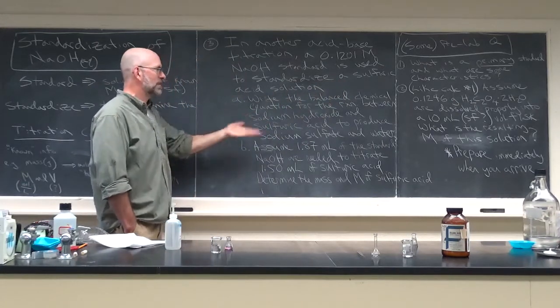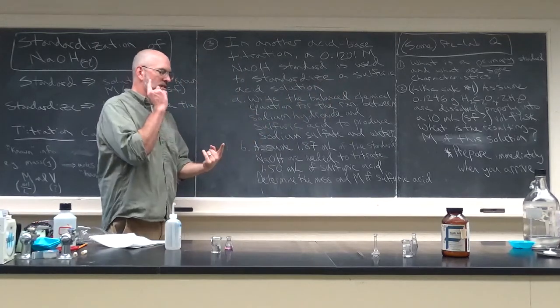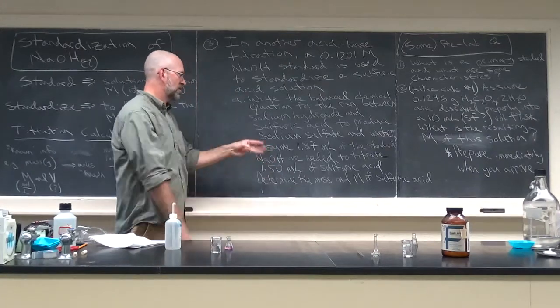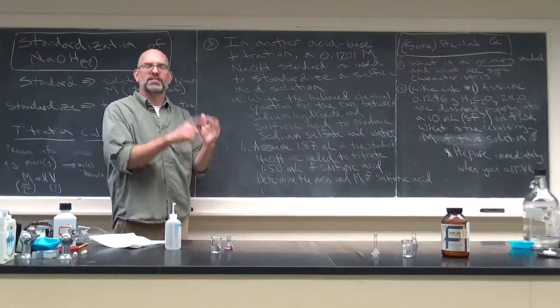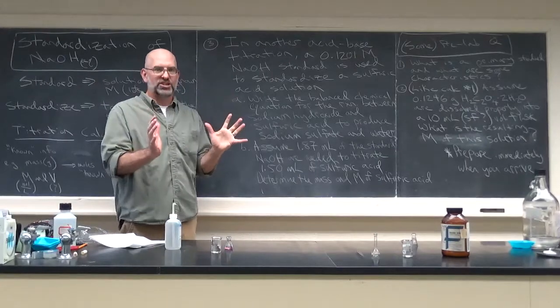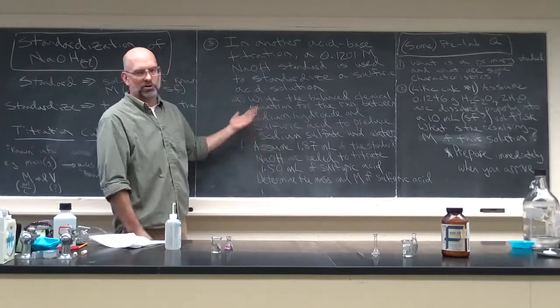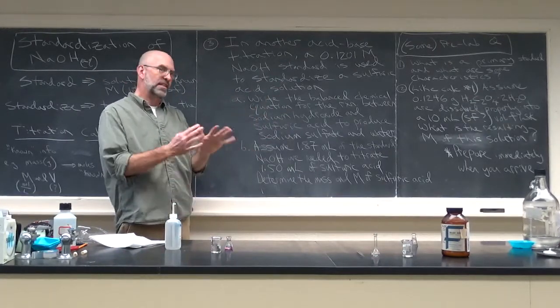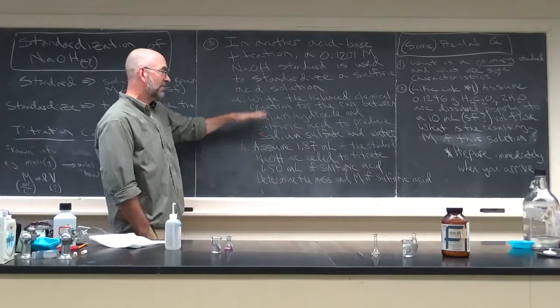So the first thing I want you to do is write the balanced equation. So sodium hydroxide plus sulfuric acid produces sodium sulfate in water. It's an acid-base neutralization reaction. Just make sure you know the chemical formula. Sulfuric acid, sodium sulfate, it's a balanced, and it's not too tough. You have to have that.